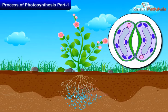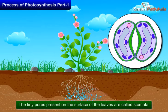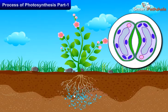Carbon dioxide from air is taken through tiny pores called stomata present on the surface of the leaves. These pores are surrounded by guard cells.